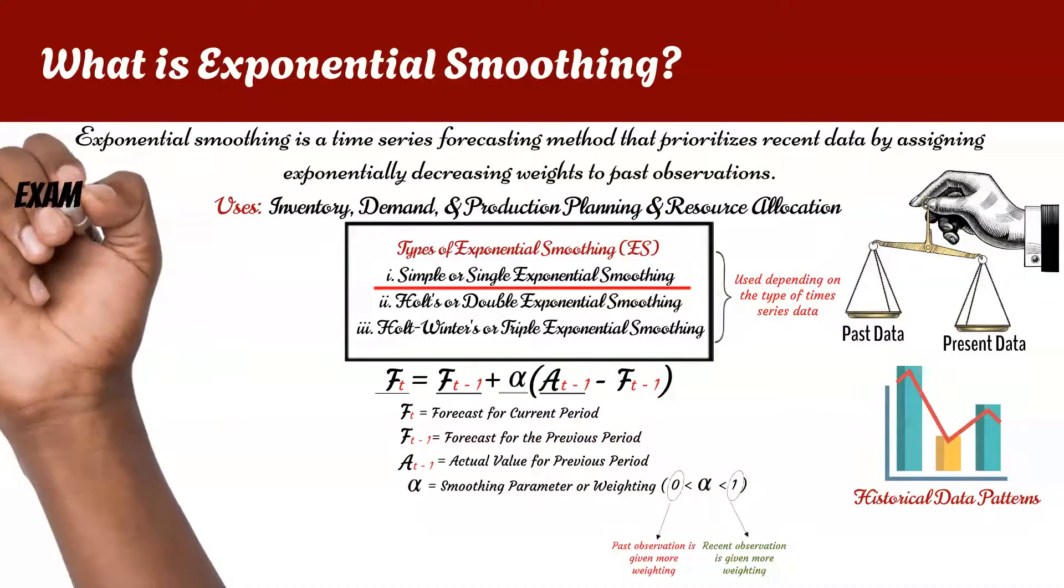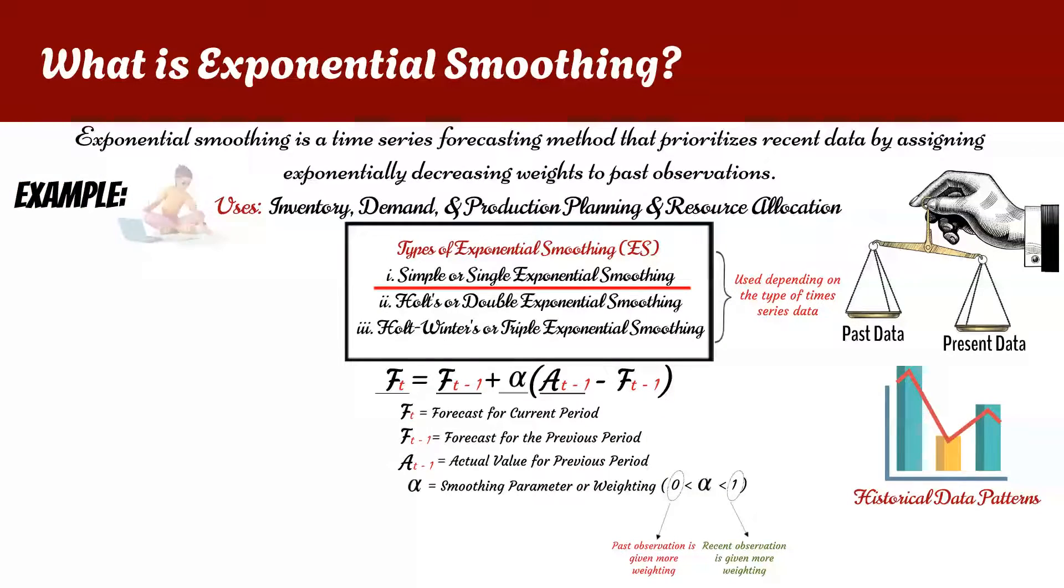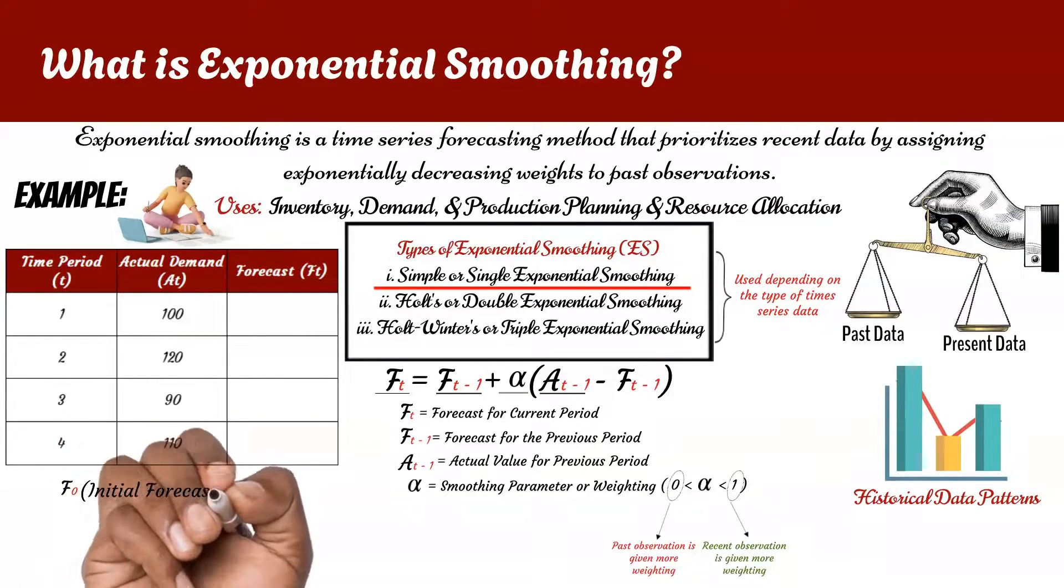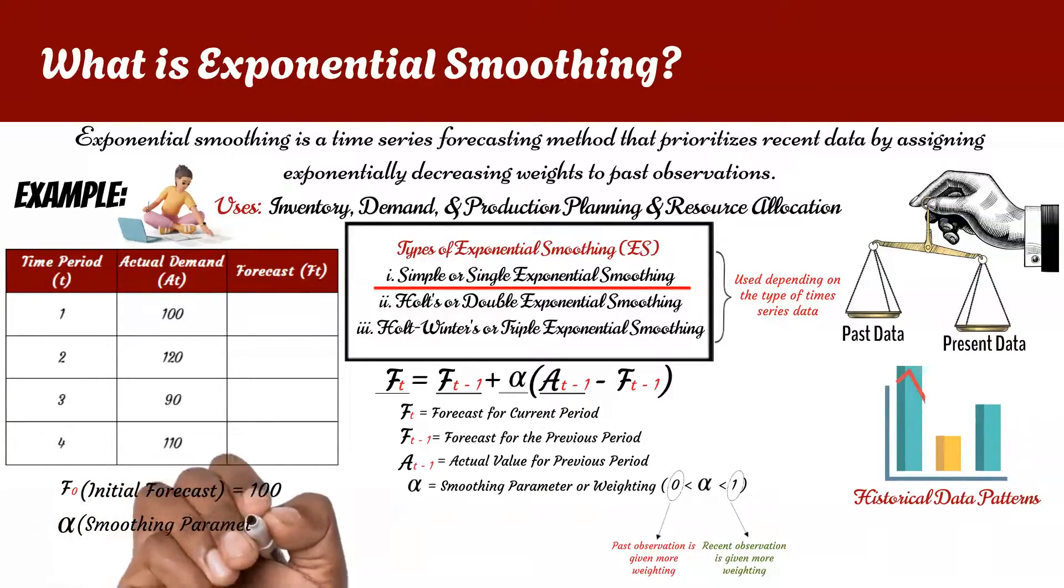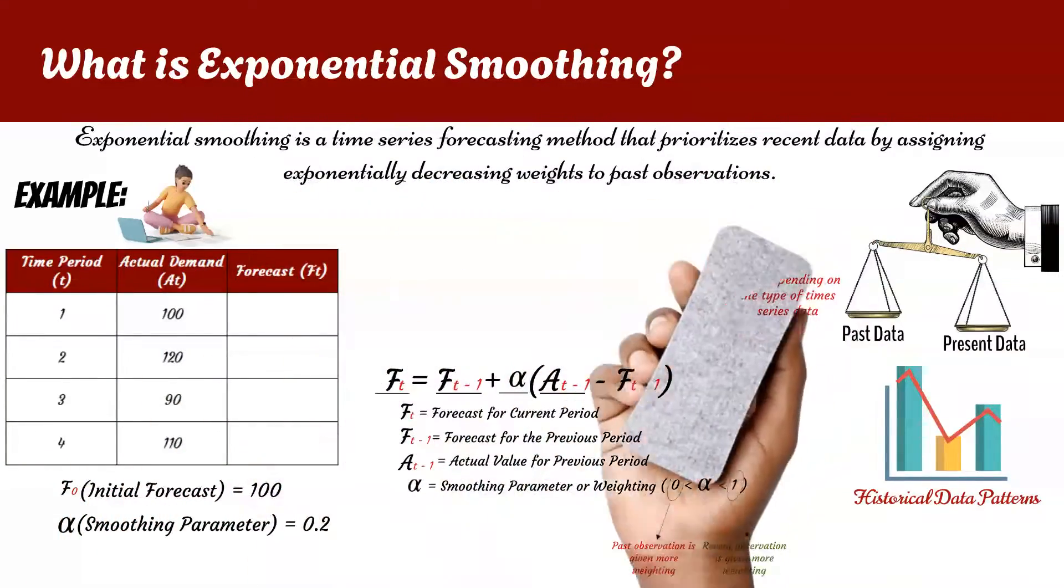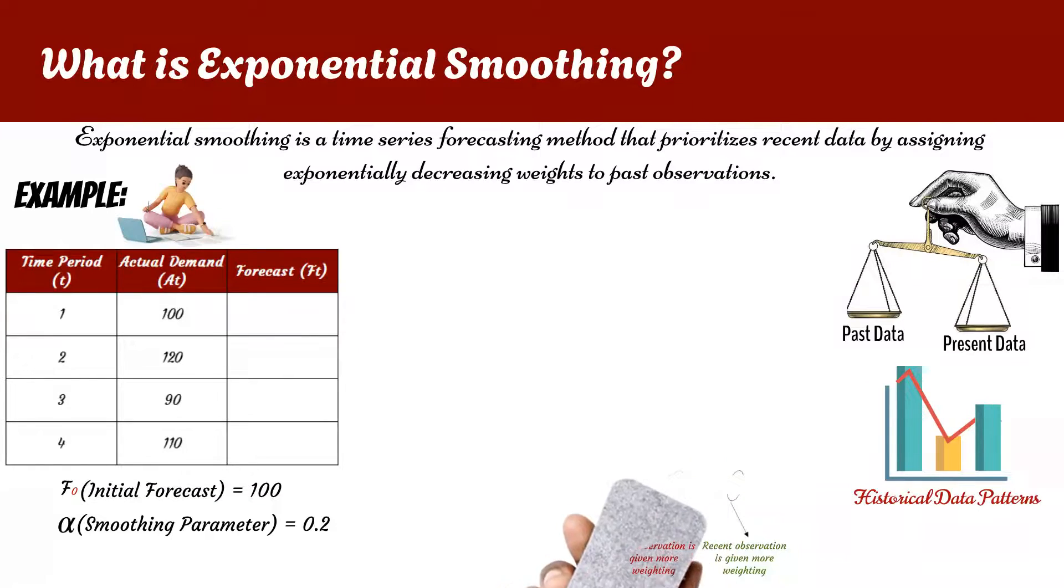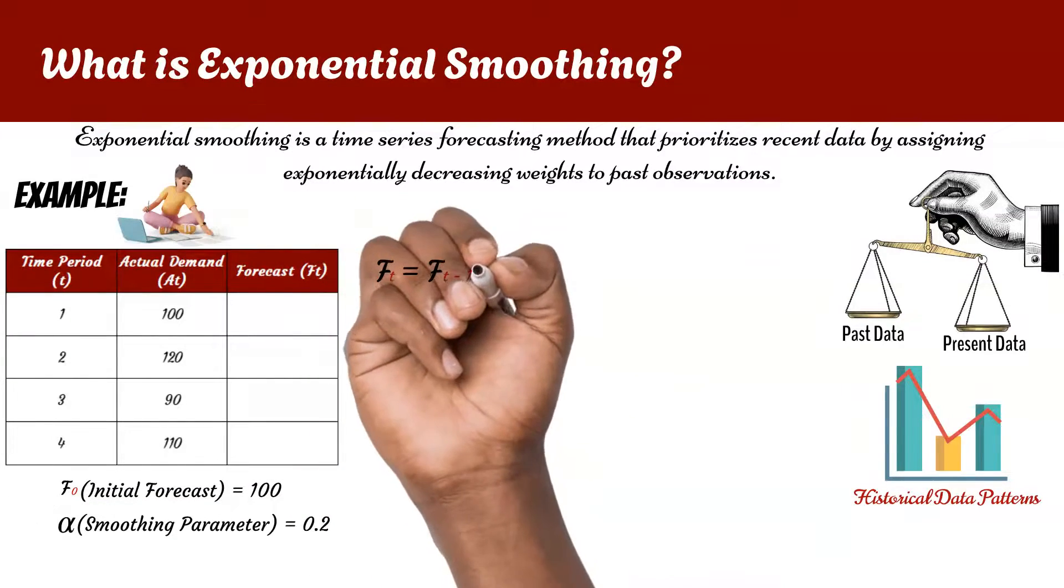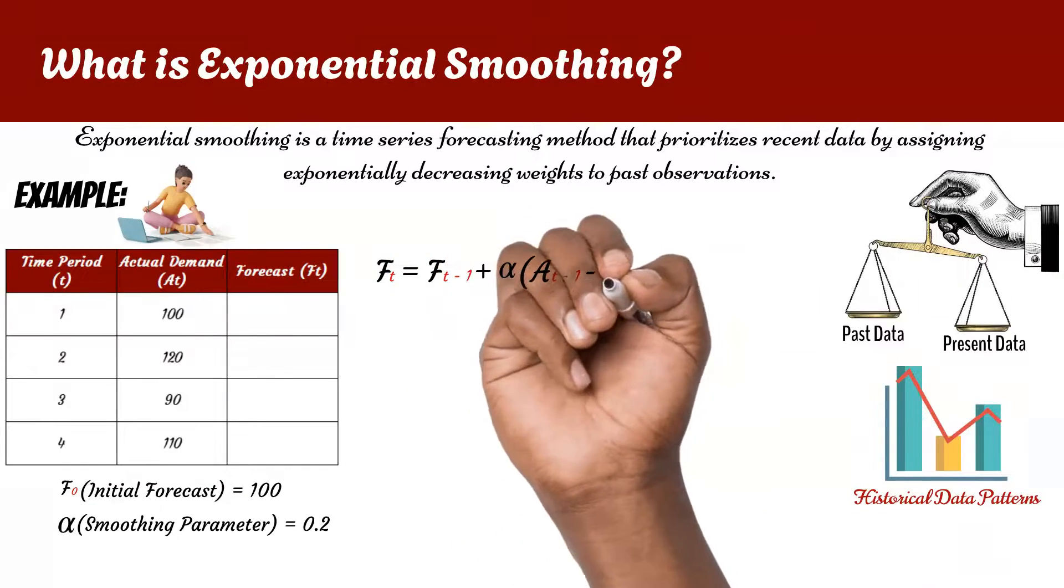Now consider an example. Let's say you are a manager responsible for inventory planning, and you want to forecast the demand for a product based on the previous data. Here is a table with the given data. Assuming an initial forecast F0 of 100 units, and a smoothing parameter alpha of 0.2, using single exponential smoothing, you are required to calculate the forecast for each subsequent period.